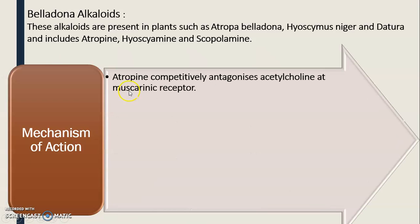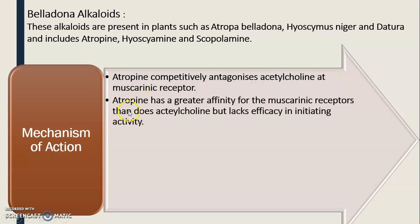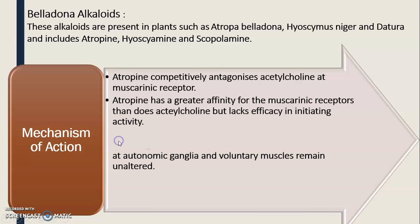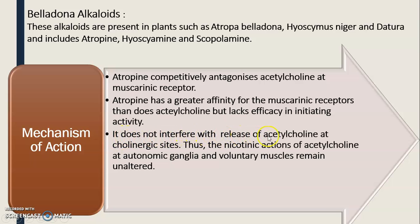Regarding the mechanism of action: atropine competitively antagonizes acetylcholine at the muscarinic receptor. Atropine has a greater affinity for the muscarinic receptor than acetylcholine does, but lacks the efficiency in initiating activity. It does not interfere with the release of acetylcholine at the cholinergic site. Thus, the nicotinic action of acetylcholine at the autonomic ganglia and voluntary muscle remains unaltered.